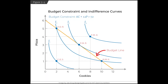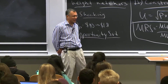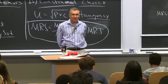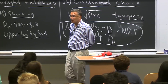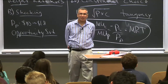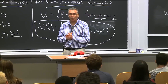Do the same math starting at point B and you'll find the MRS is much below one-half. At that point — say 10 cookies and one pizza — you're willing to give up tons of cookies to get pizza. But the market says you only have to give up two cookies to get a slice of pizza, so you'll happily do it and move back toward point D. That's the intuition, math, and graphics of constrained optimization — it's hard and very important.